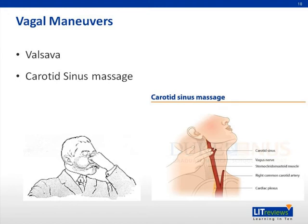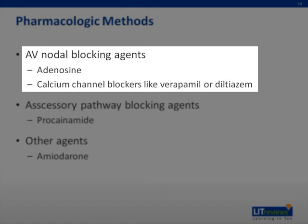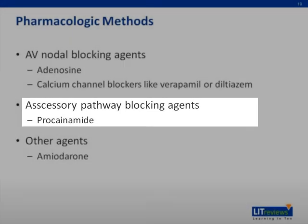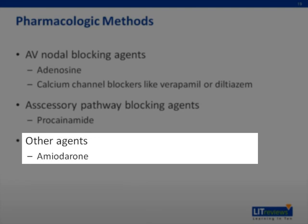If vagal maneuvers fail, proceed to pharmacological methods for chemical cardioversion. AV nodal blocking agents like adenosine and calcium channel blockers like verapamil or diltiazem work at the AV node to break the reentrant circuit by blocking the limb of the circuit within the AV node. Adenosine is the most commonly used agent. Agents that block the accessory pathway preferentially, like procainamide, can be used especially in antidromic conduction in Wolff-Parkinson-White syndrome, where AV nodal blocking agents are contraindicated. Other agents like amiodarone can also be used if usual therapies fail.